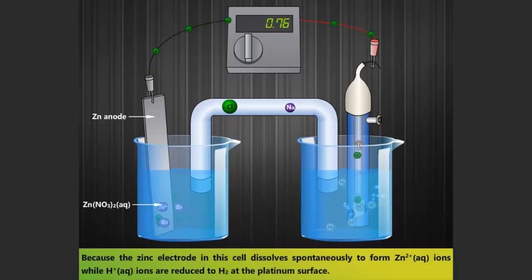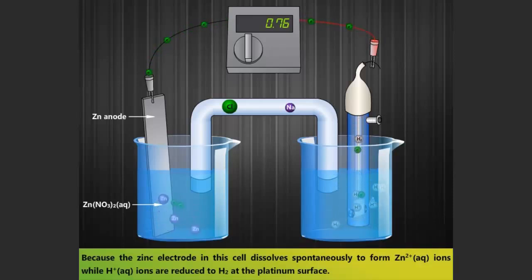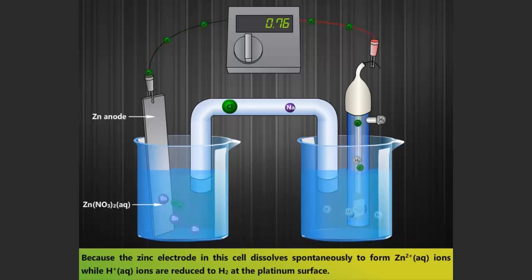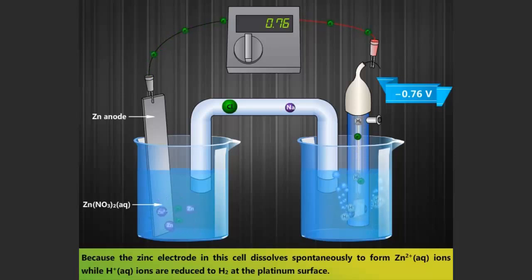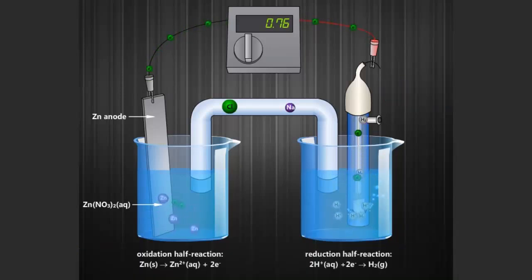Because the Zinc electrode in this cell dissolves spontaneously to form Zn²⁺ aqueous ions, while H⁺ aqueous ions are reduced to H₂ at the platinum surface. The standard electrode potential of the Zn²⁺/Zn couple is minus 0.76V.